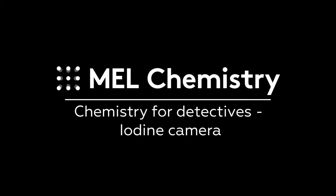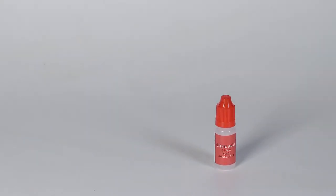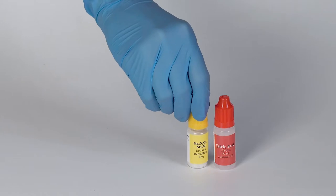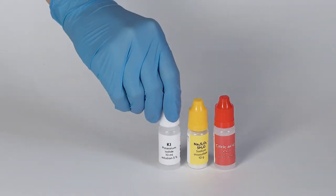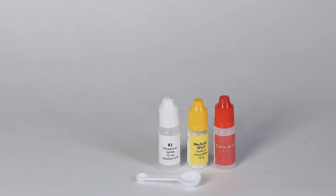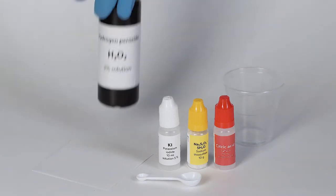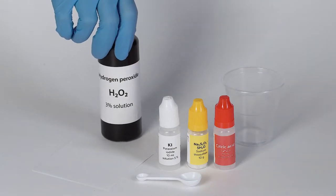For the iodine camera experiment, you will need the solution of citric acid, sodium thiosulfate, the solution of potassium iodide, a measuring spoon, a white sheet of paper, a disposable cup, and 3% hydrogen peroxide solution.